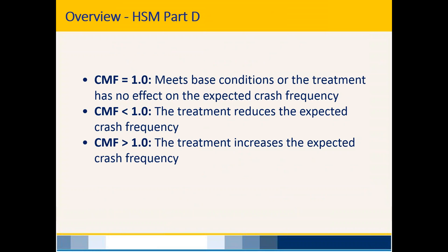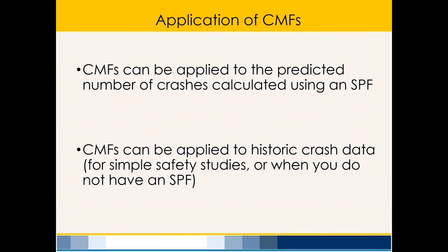CMF values represent the percent increase or decrease a particular treatment will have on crash frequency. The CMF is used in decimal form. A CMF of 1 means the treatment has no effect; a CMF less than 1 means the treatment will reduce crash frequency. CMFs can be applied in two basic ways: applied to the predicted crashes calculated from an SPF, or applied directly to historic crash data. The second method is simpler and sometimes the only option if you don't have a reliable SPF.